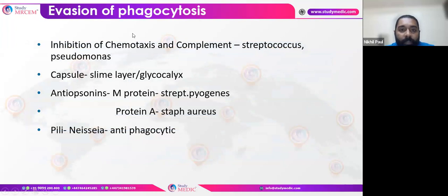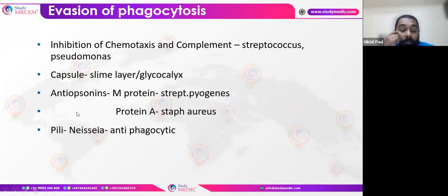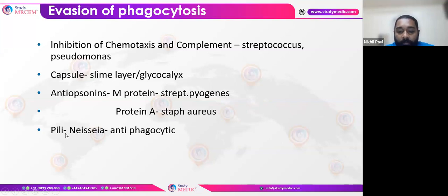Pathogens use various methodologies to evade phagocytosis. For example, Streptococcus and Pseudomonas inhibit chemotaxis and complement by various surface factors. Most pathogens also have a capsule, also called a slime layer or glycocalyx. They also produce anti-opsonins — M-protein in Streptococcus pyogenes, protein A in Staphylococcus aureus, and pili in Neisseria act as anti-phagocytic factors.